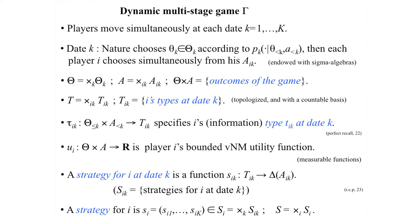These are dynamic multi-stage games. Players move simultaneously, and we'll suppose there are finitely many dates. At the beginning of date K, nature first chooses a state theta_K according to some probability distribution. In general, that distribution over states at date K can depend on nature's previous choices — states theta at dates less than K — and all of the actions the players chose.